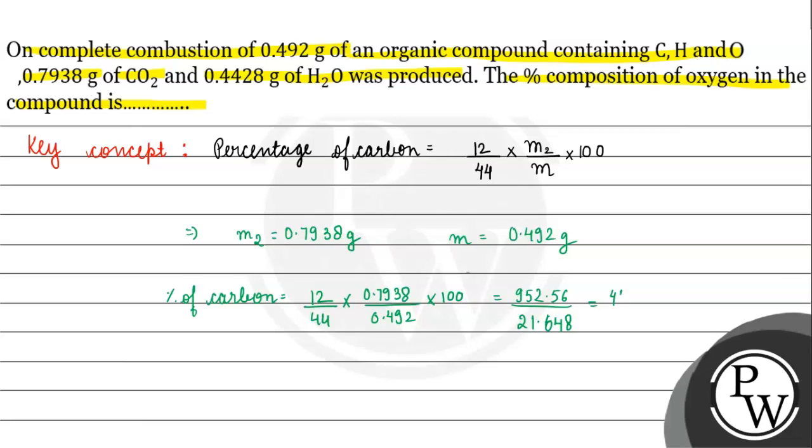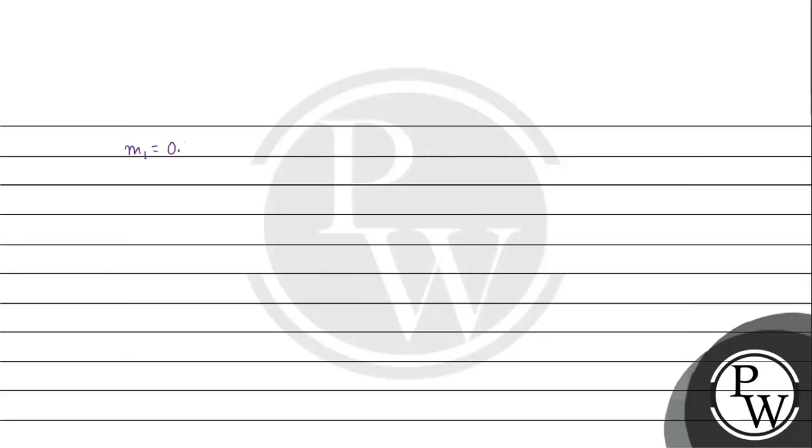If we talk about the percentage of hydrogen, what will happen? 2 by 18, multiplied by M1, which is the mass of water. How much is M1? M1 is 0.4428 grams, divided by M which is 0.492 grams. The percentage of hydrogen basically equals 2 by 18 times 0.4428 by 0.492 into 100.